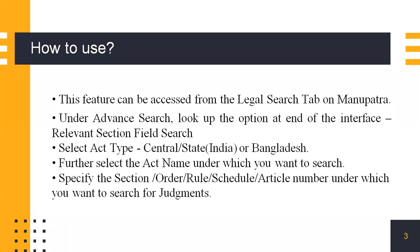You need to enter the variables that appear there: the act type, the act name, and then select whether you're going for a section, order, rule, schedule, or article — and then enter the number associated with it. You can then search for the judgments.